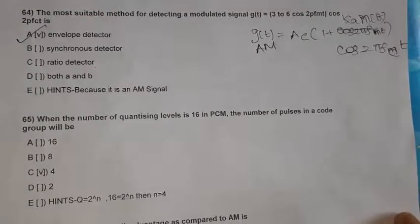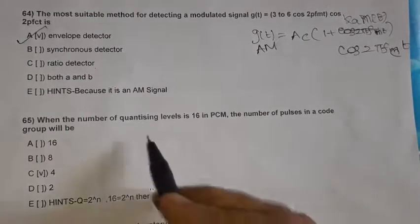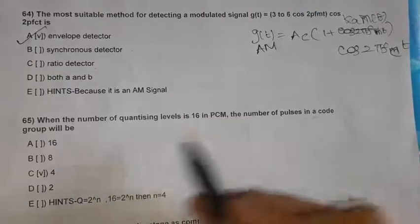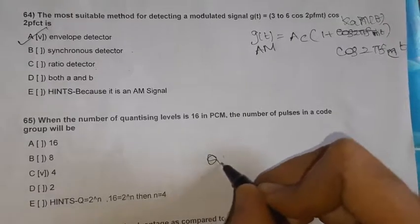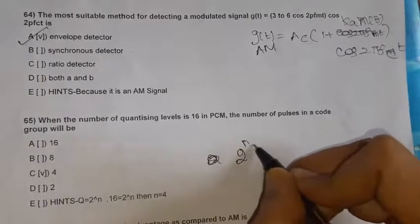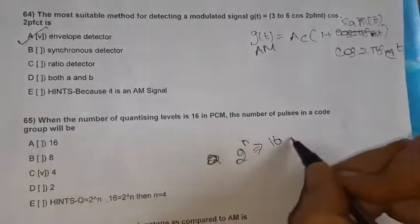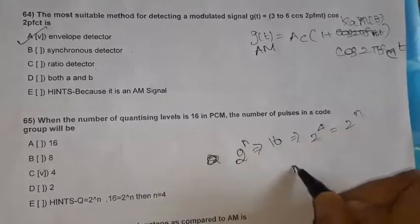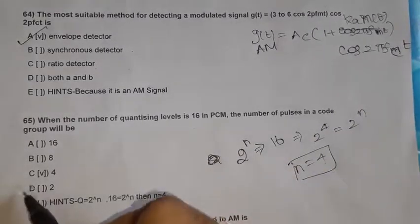Question 65: When the number of quantizing levels is 16 in PCM, the number of pulses in the group is found using Q equals 2 power N. So 2 power N equals 16, which means 2 power 4 equals 2 power N, therefore N equals 4.